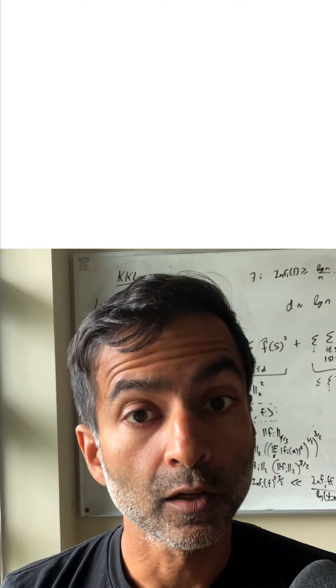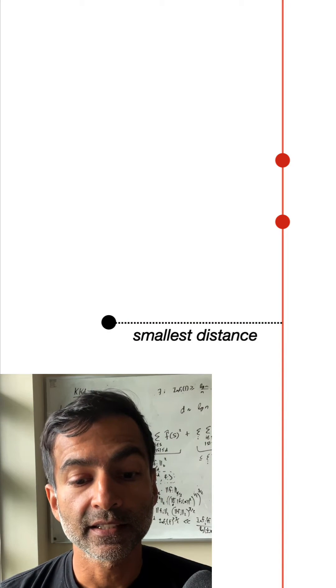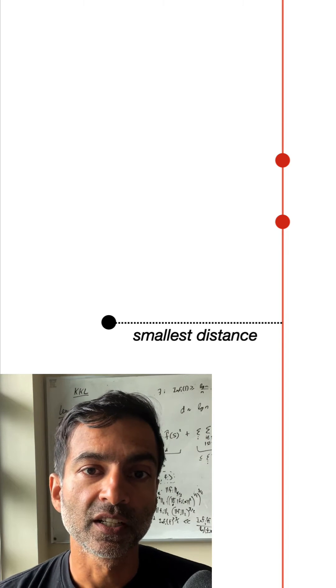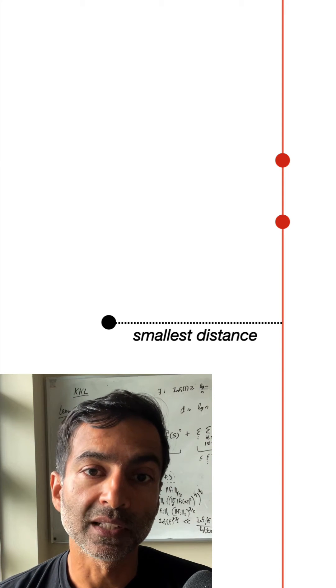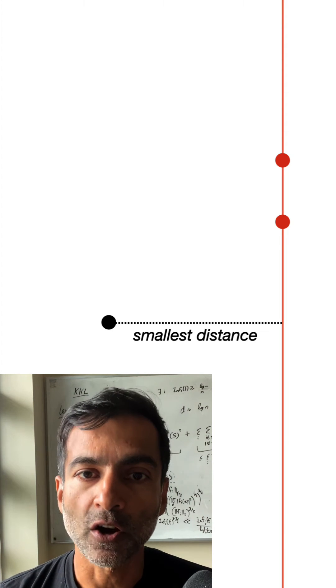So let's find the closest such configuration. Let's find a point, like in this picture, which is closest to the line that passes through two other points without actually lying on that line.